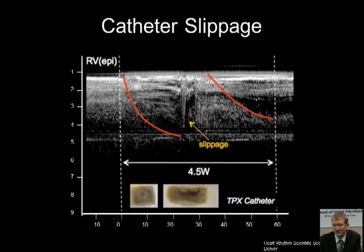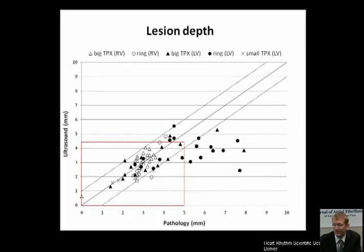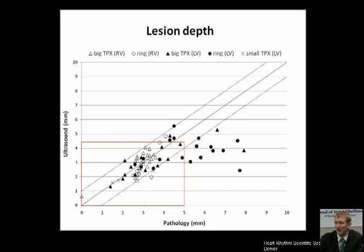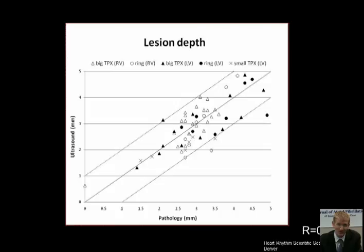Here are the results from the 112 lesions. There is very good correlation up to 5 mm. Beyond 5 mm, the resolution decreases and the correlation is not as good. On this graph, the 95% confidence limits are shown with the two dashed lines. For atrial fibrillation ablation, left atrium thickness is around 2 to 3 mm for most of the posterior wall, so the 5 mm depth of penetration is adequate. The R value is 0.78. We are working on further ways to improve this technology to go beyond 5 mm.